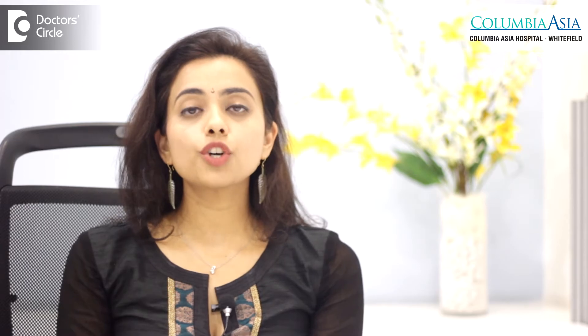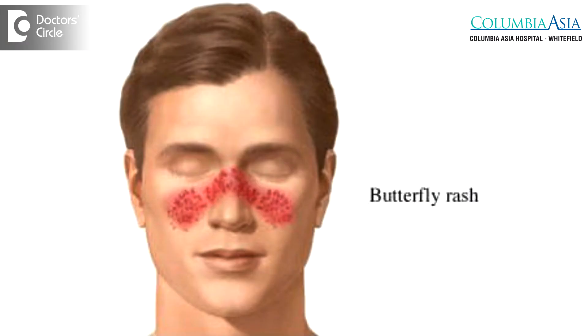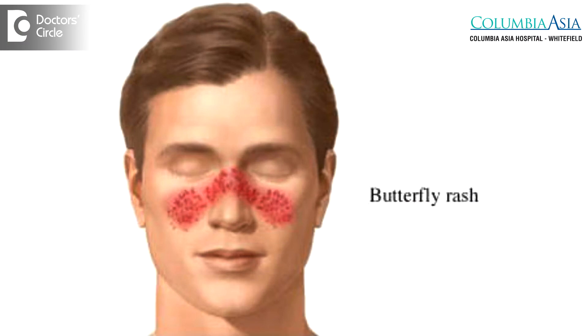Glomerulonephritis is a term that refers to inflammation within the kidneys. There are many different causes of glomerulonephritis. Some causes only involve the kidneys. There are other causes that are systemic diseases such as diabetes or lupus, which is an autoimmune disease that can affect multiple organs including the kidneys.